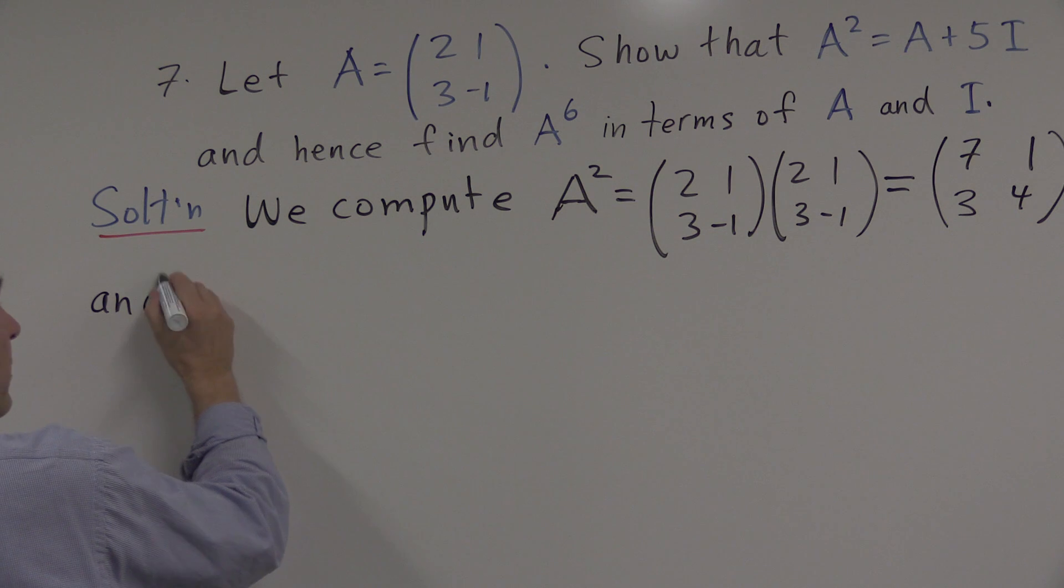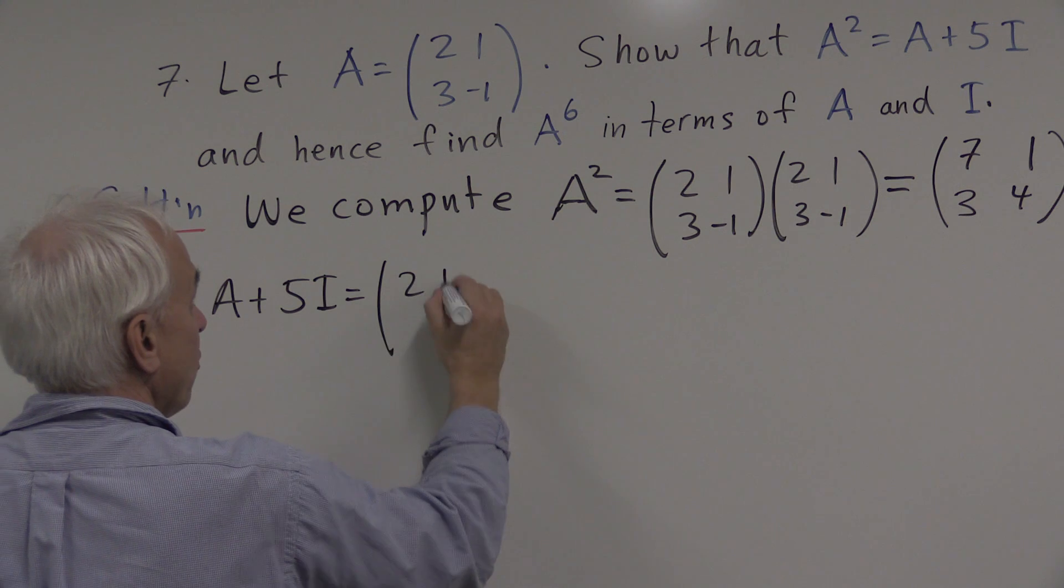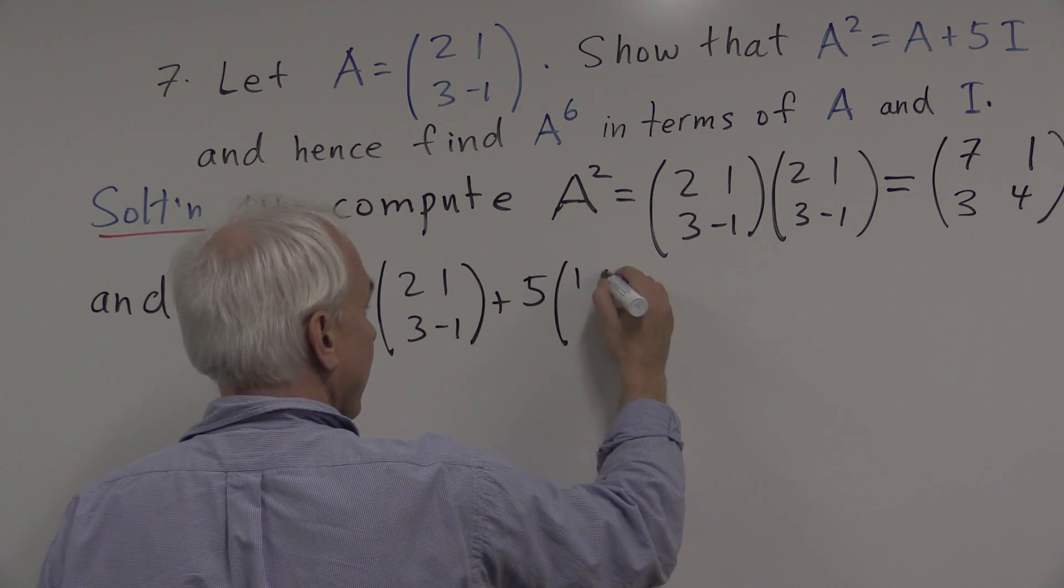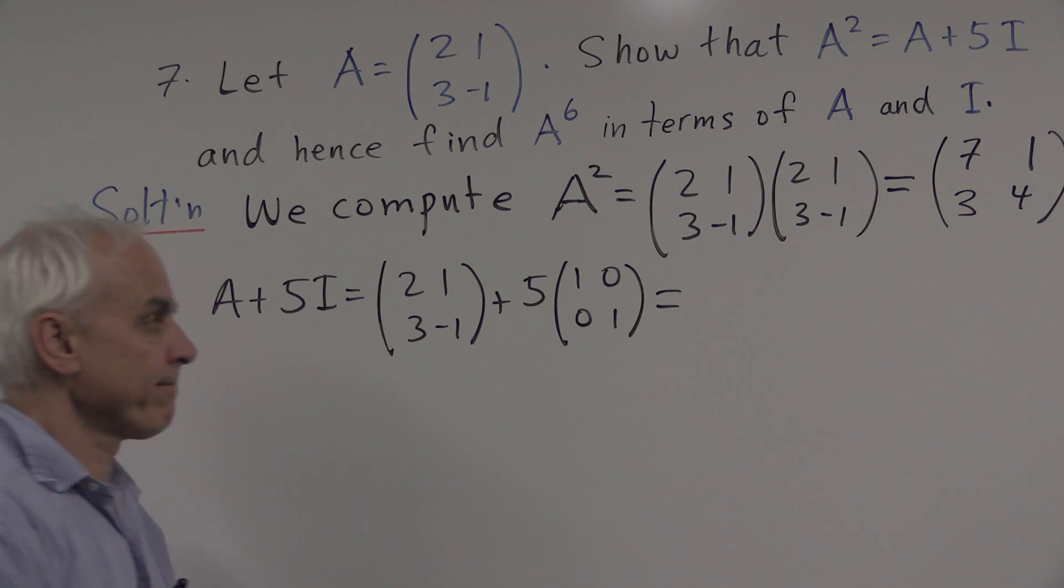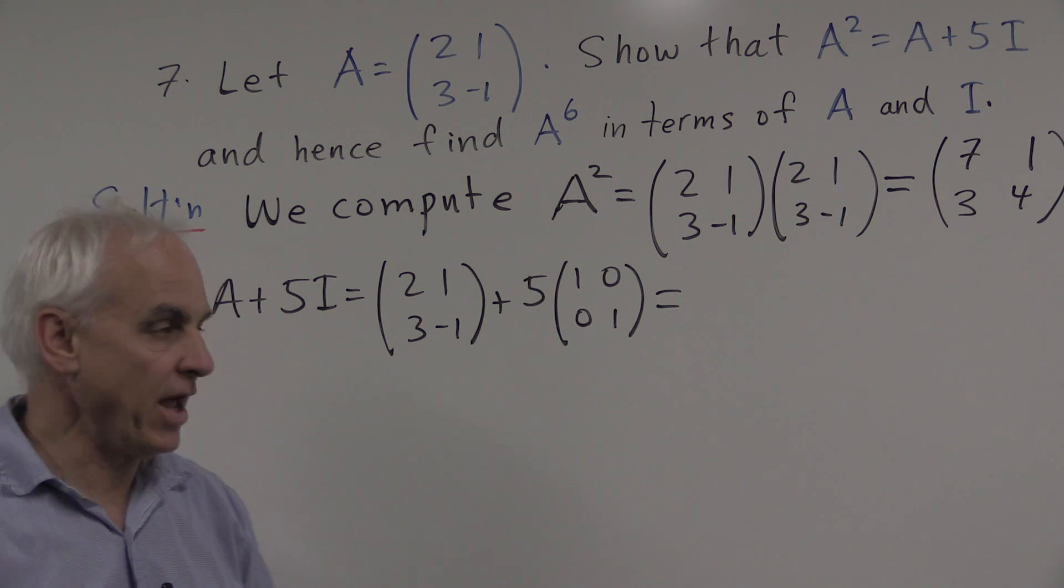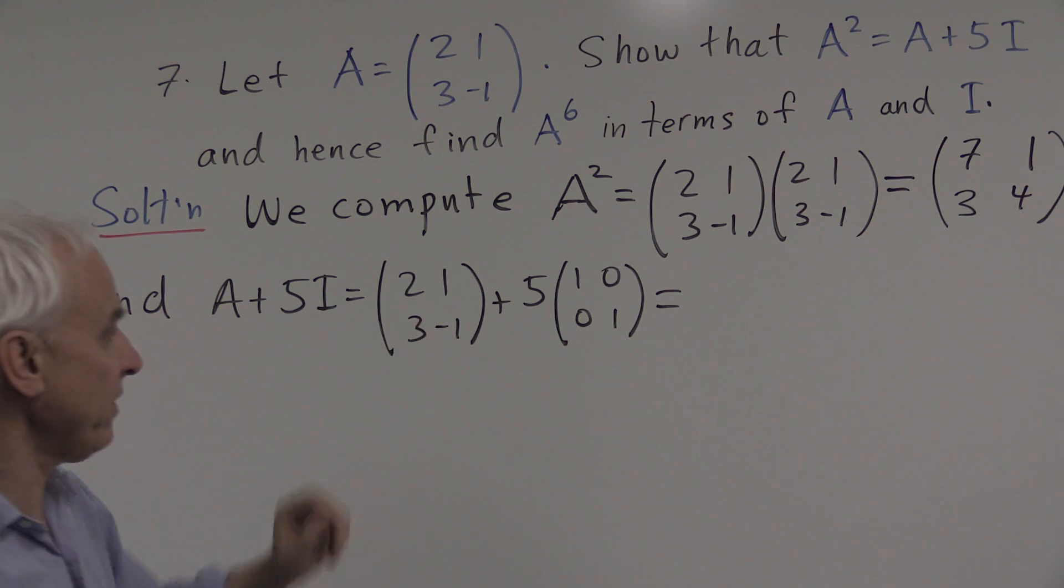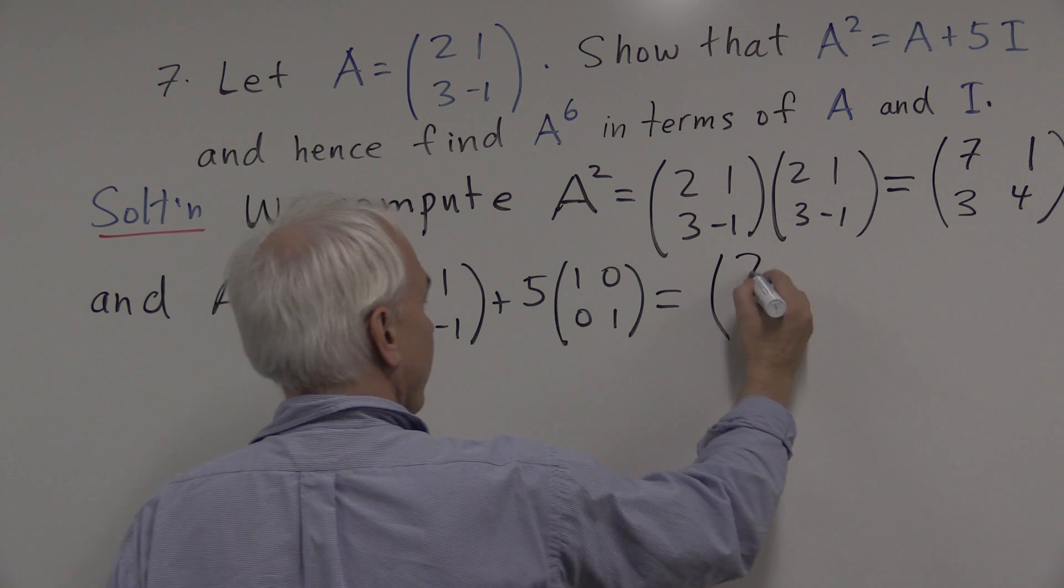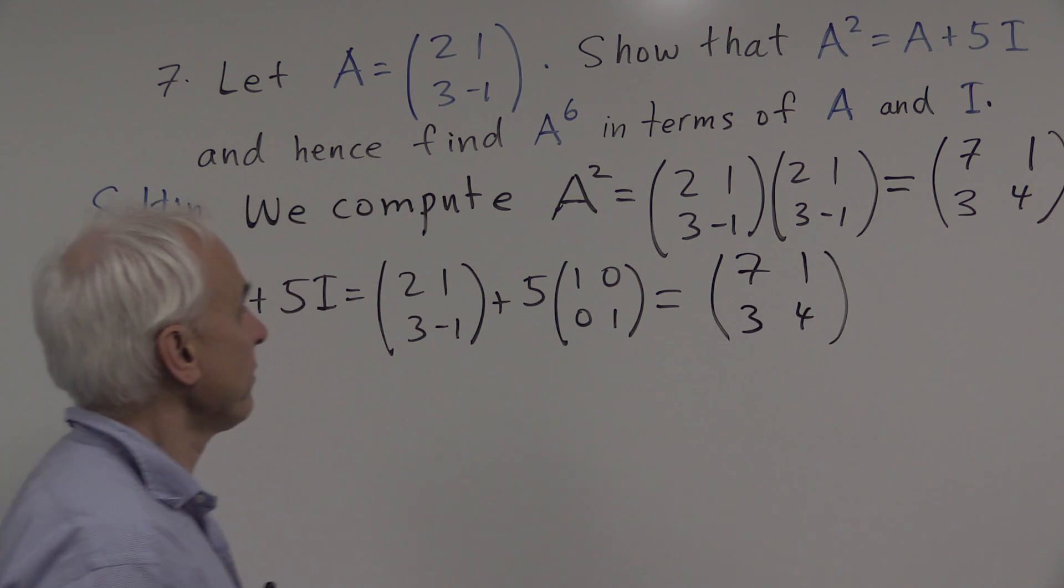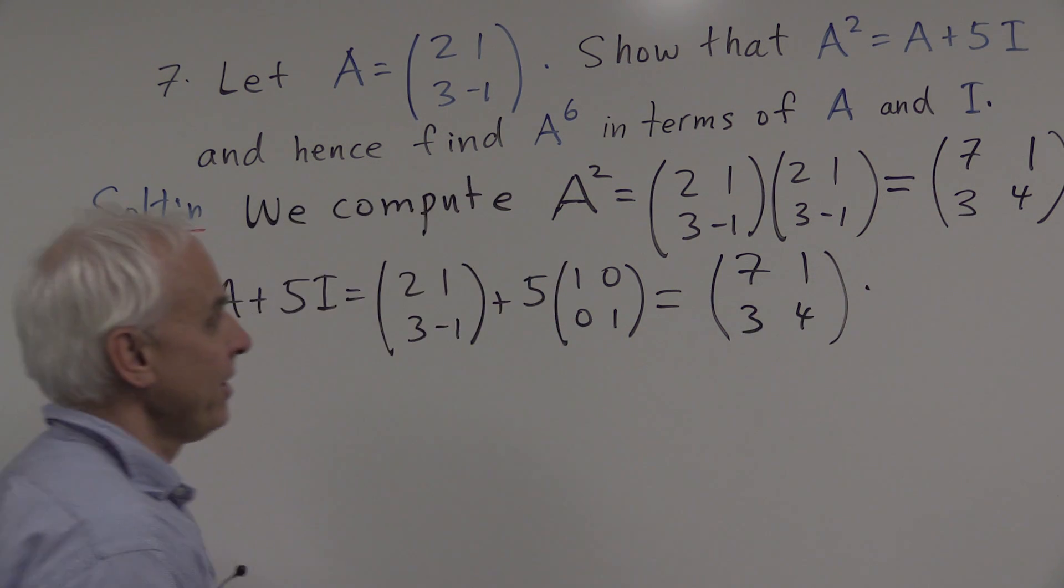And also A plus 5I. Well, A is 2, 1, 3, minus 1. We're adding 5 times the identity matrix. 5 times the identity matrix is just the matrix with 5s along the diagonal. So just basically adding 5 to the diagonal elements and leaving the rest unchanged. So we get 7, 1, 3, and 4. And so we see that these two are equal as required.